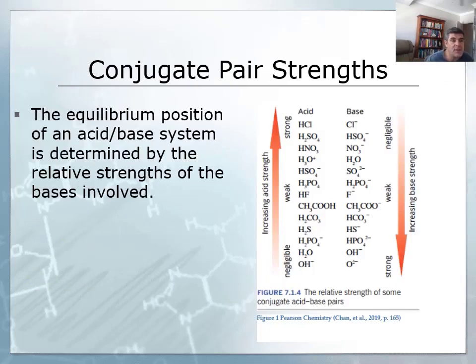One of the important things about conjugate pairs is that we can actually use them to start to get a sense of the strength of different types of acids or bases. This is independent of what we've looked at previously, which were mathematical expressions for the difference between a strong and a weak acid.